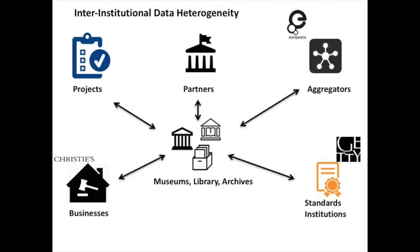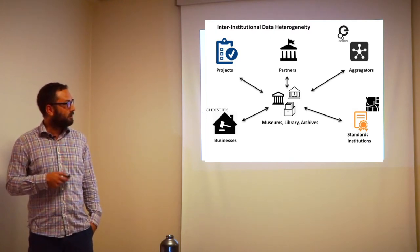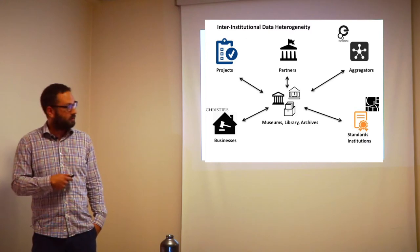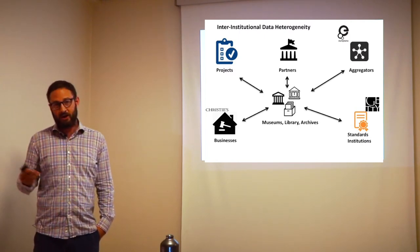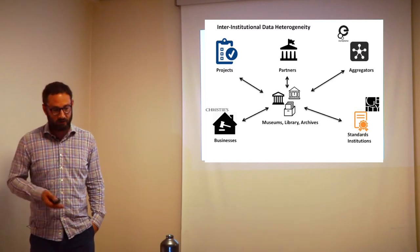More and more institutions and researchers get involved in larger projects at a national or European level and work with external partners. Working with a well-known aggregator like Europeana means you have to create another expression of your data, which is another piece of the data heterogeneity puzzle — though a good one, as it allows you to share data. You might also work with a business partner such as Christie's catalogues of what's been bought and sold over time. And if you work in a project, they might choose their own ad hoc standard, which again commits you to creating more data structures and more diversity that you have to figure out how to solve.